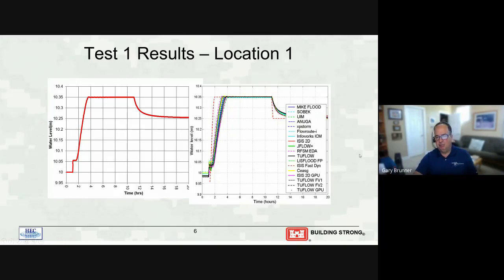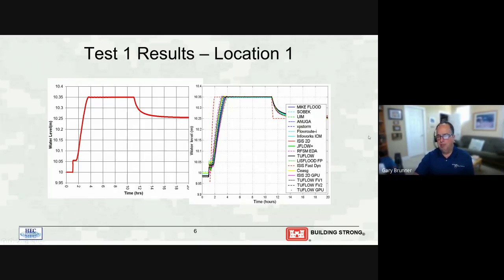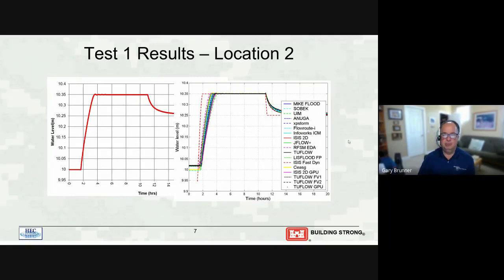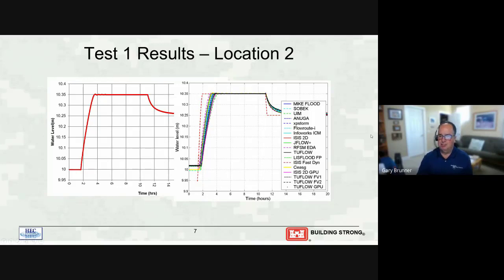That red dashed model is called ISIS Fast — it's not even really solving the shallow water equations or even the diffusion wave equations, just a very simple method of moving water from cell to cell, so it's not as accurate. But there are some models you've probably heard of: MIKE Flood, SOBEK, TUFLOW, and others. At test location two, RAS is right down the middle of the results of most of the models. The models I was most concerned about comparing against — which I think are other good models — are MIKE Flood, SOBEK, TUFLOW, and ISIS 2.